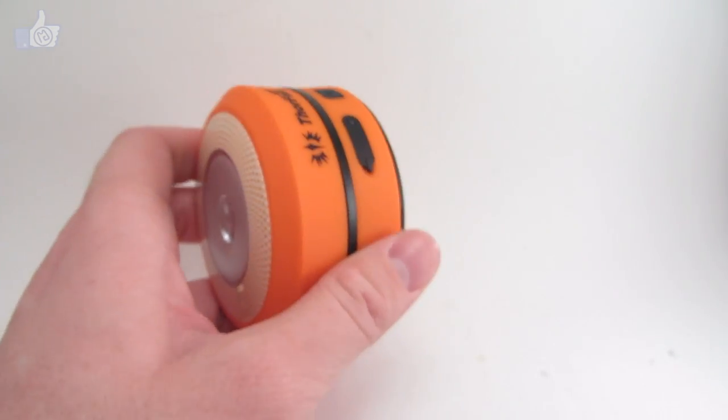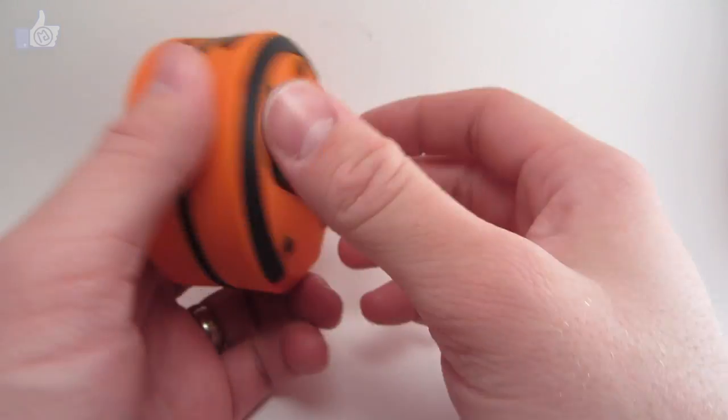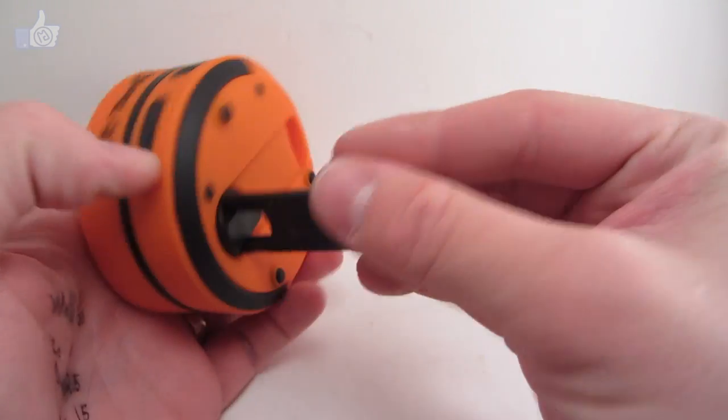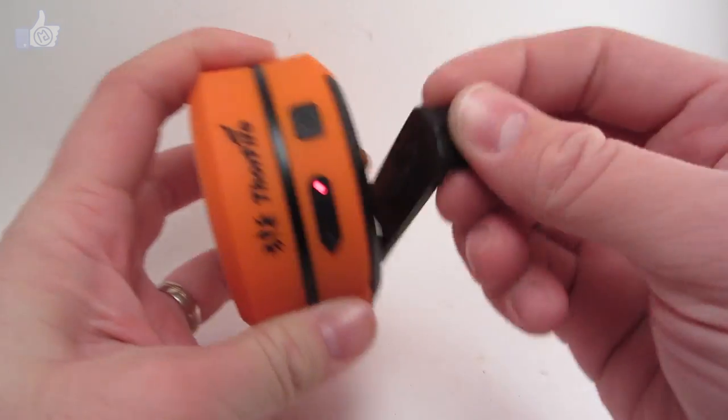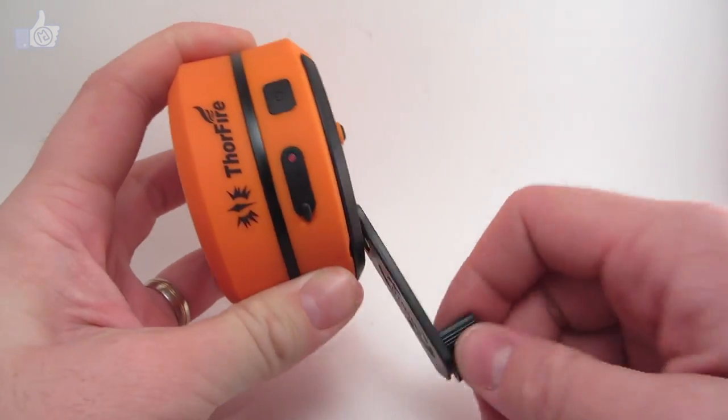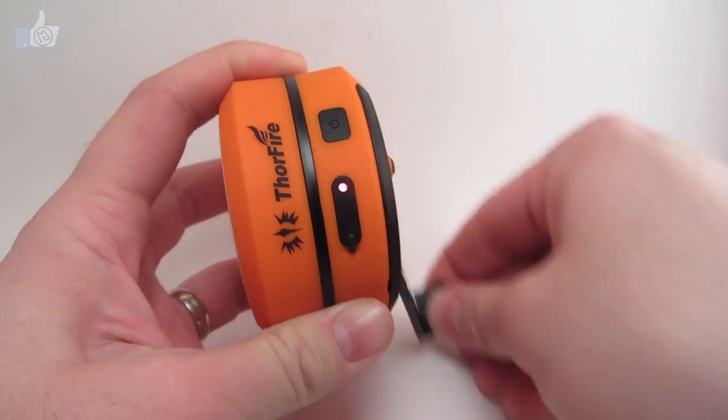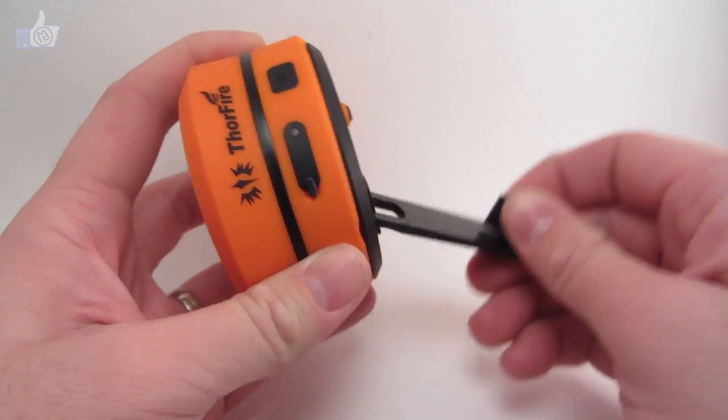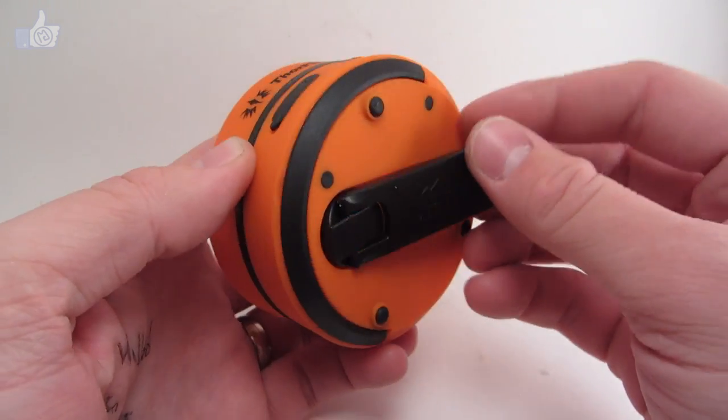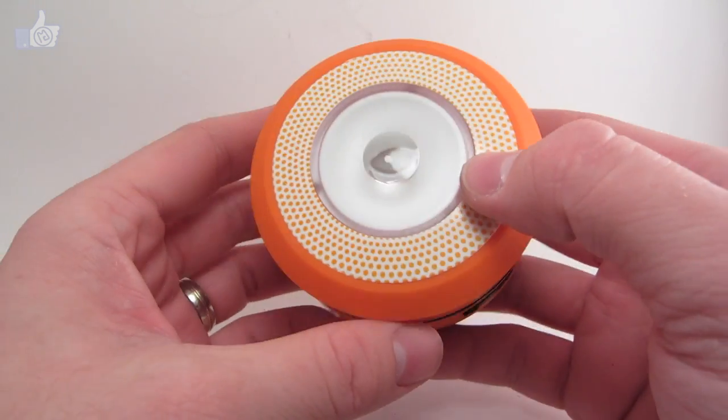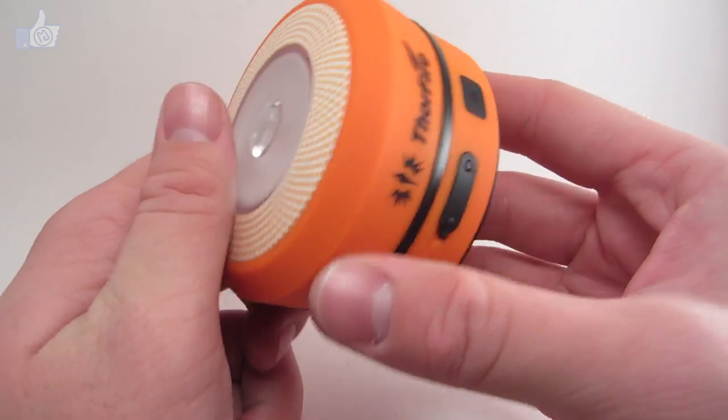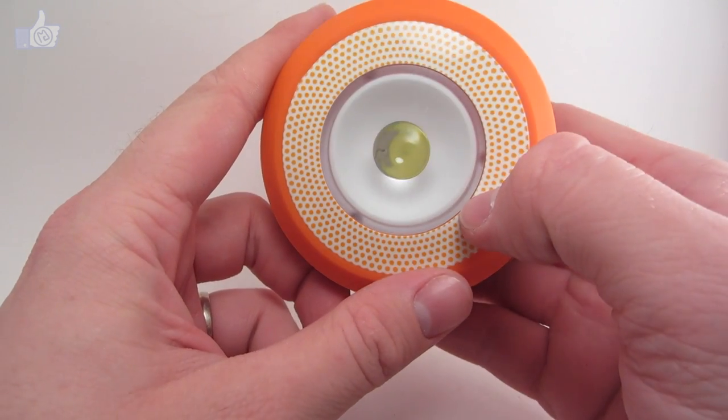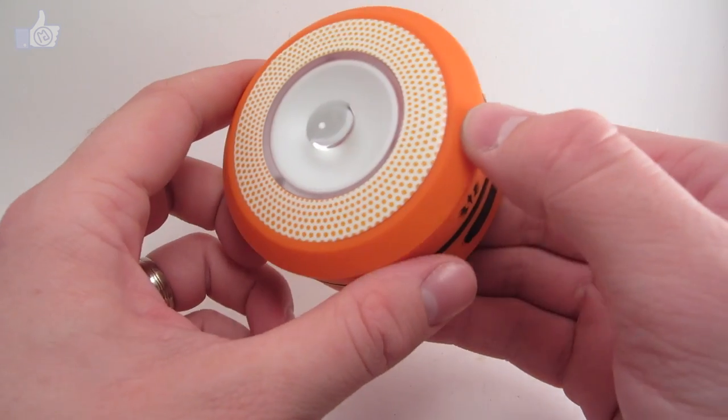The other method for charging this flashlight we'll go ahead and show is by cranking this handle here. This just flips out. And then, as you turn this, you can see that little red light lights up to let you know that you're charging. And then it turns off again when you stop cranking. So, there's one way to charge the battery. The instruction manual recommends rotating that three times a second, so it'd be pretty fast, I think, to do with just your hands. But maybe it's possible.